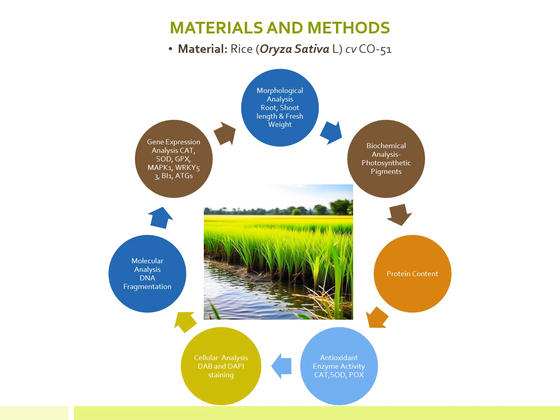The materials and methods used in this study: for morphological analysis, we estimated root length, shoot length, and fresh weight. For biochemical analysis, photosynthetic pigments, protein content, and antioxidant enzyme activity — catalase, superoxide dismutase, and peroxidase — were conducted. For cellular analysis, leaves were stained with DAPI and DAB for detection of reactive oxygen species and nuclear fragmentation. Molecular analysis including DNA fragmentation was also conducted.